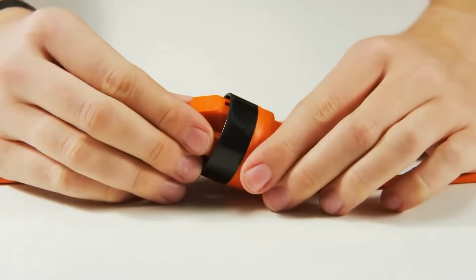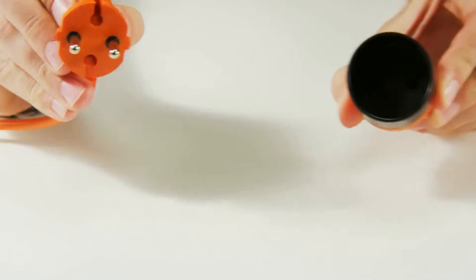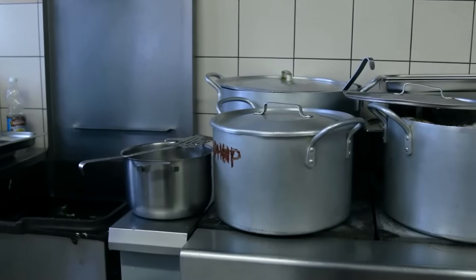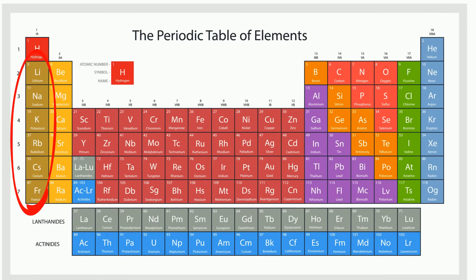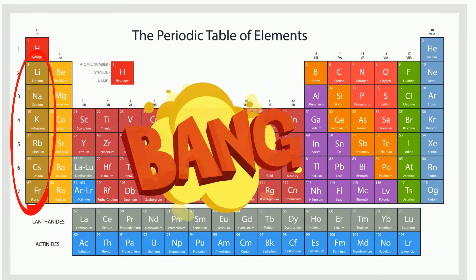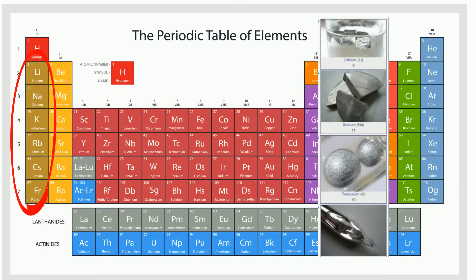Metals are good conductors of heat and electricity. All but mercury are solid at room temperature. The alkali metals are group 1 and they are the most reactive of all metals. They don't occur in nature in their element form but are always found in a compound.